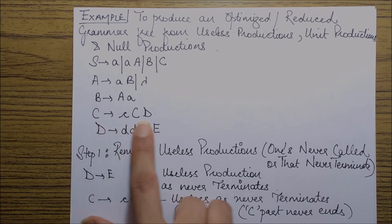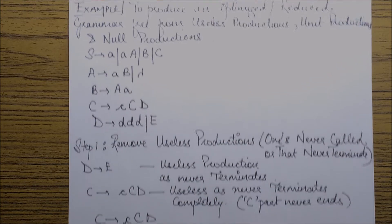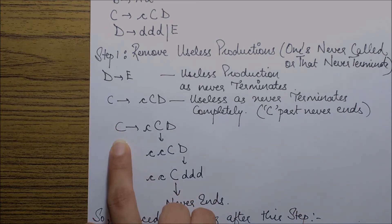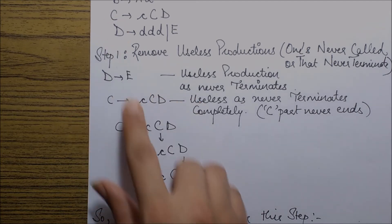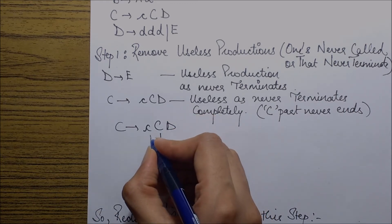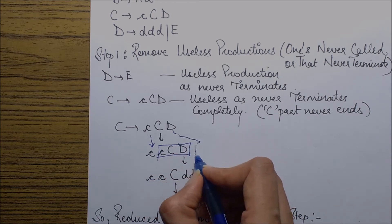Also, if I see this production S goes to C capital C D, it does not appear to be a useless production, that is one which will never terminate. But if I try substituting it, if I start with C goes to C capital C D and substitute the value of C into this, which is C C D, I would get small c small c small c C D and the previous D over here.